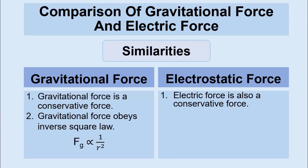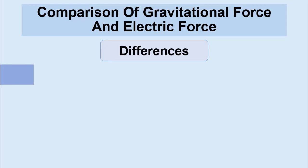Gravitational force obeys inverse square law. It means by increasing distance the force decreases two times. Likewise, electric force also obeys inverse square law. Now let's talk about the differences between both of these forces.